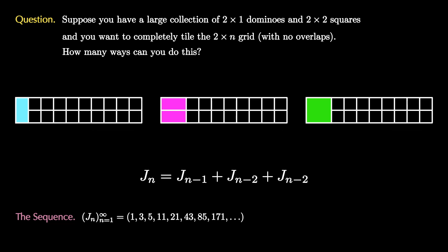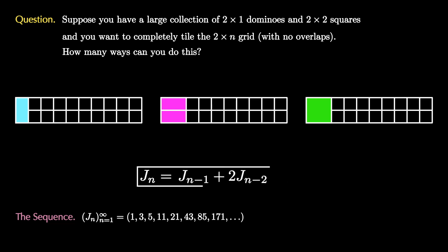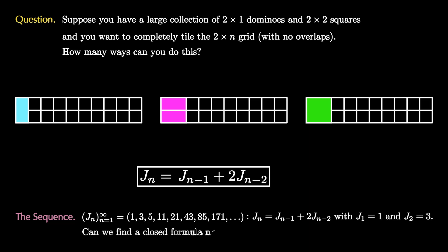Therefore, j sub n equals j sub n minus 1 plus j sub n minus 2 plus j sub n minus 2, which simplifies to j sub n minus 1 plus 2 times j sub n minus 2. Therefore, the number of tilings satisfies this recursion with the initial conditions j1 equals 1 and j2 equals 3.